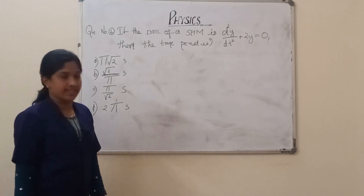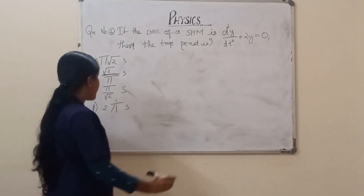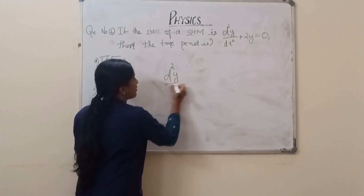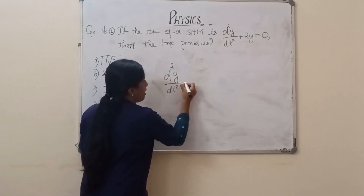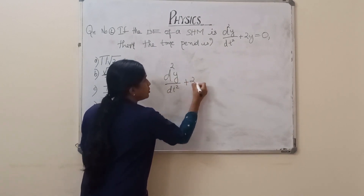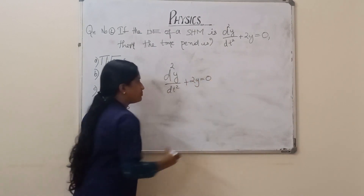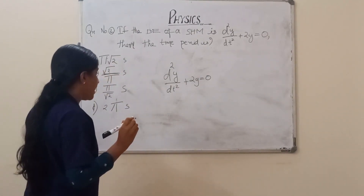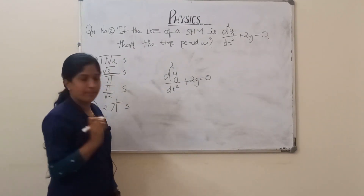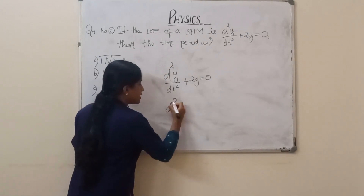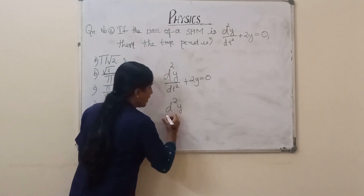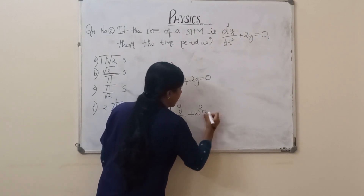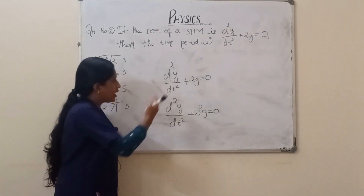How to solve this: The differential equation here is d²y/dt² + 2y = 0. The standard SHM differential equation is d²y/dt² + ω²y = 0.